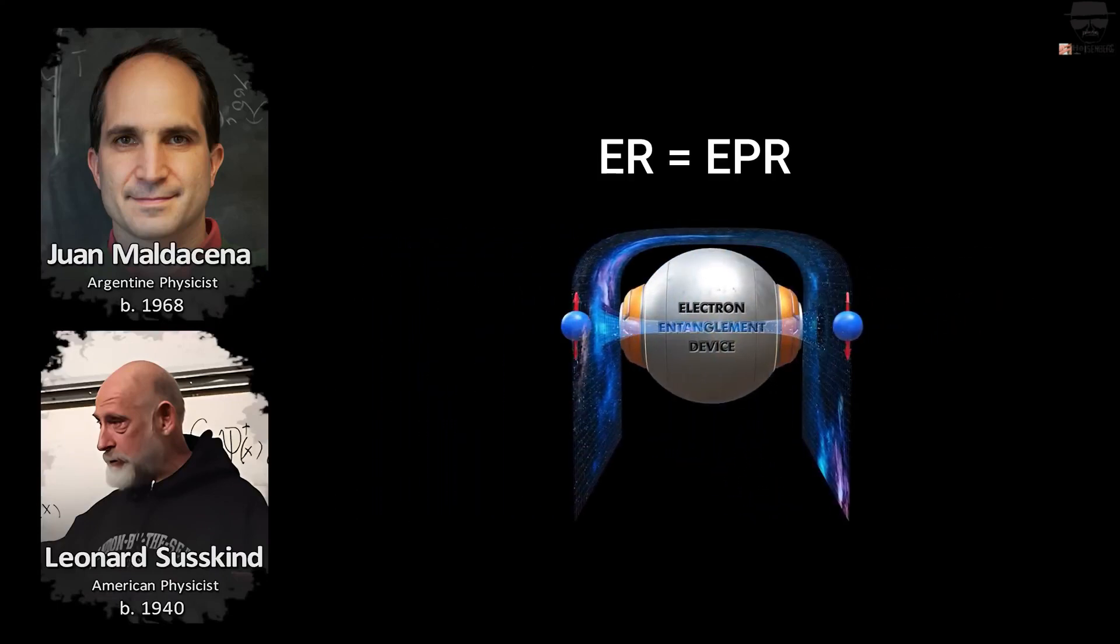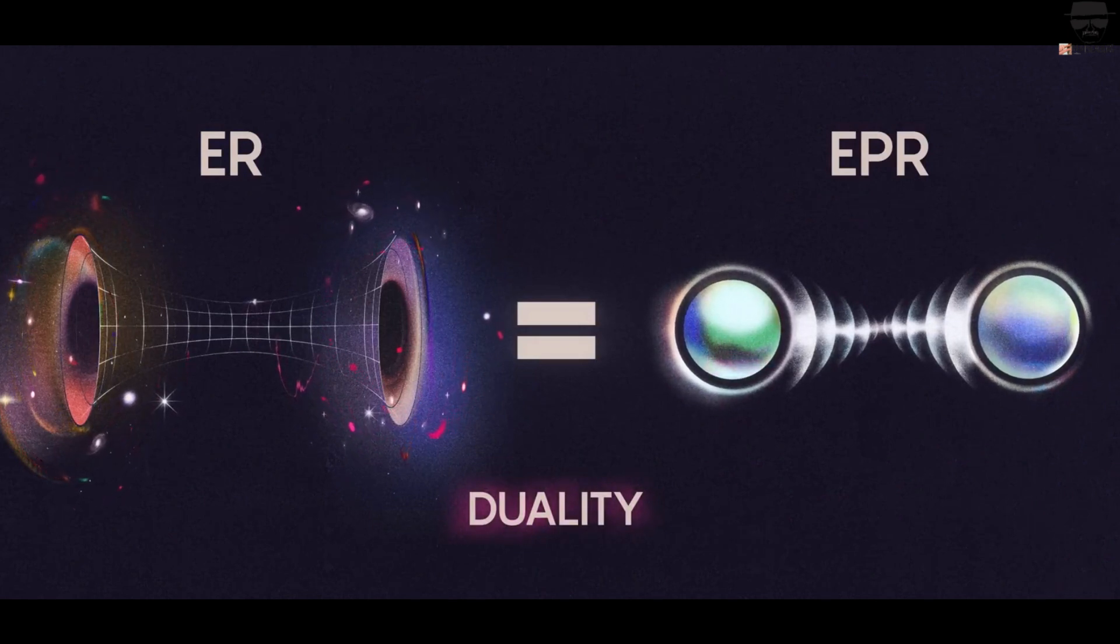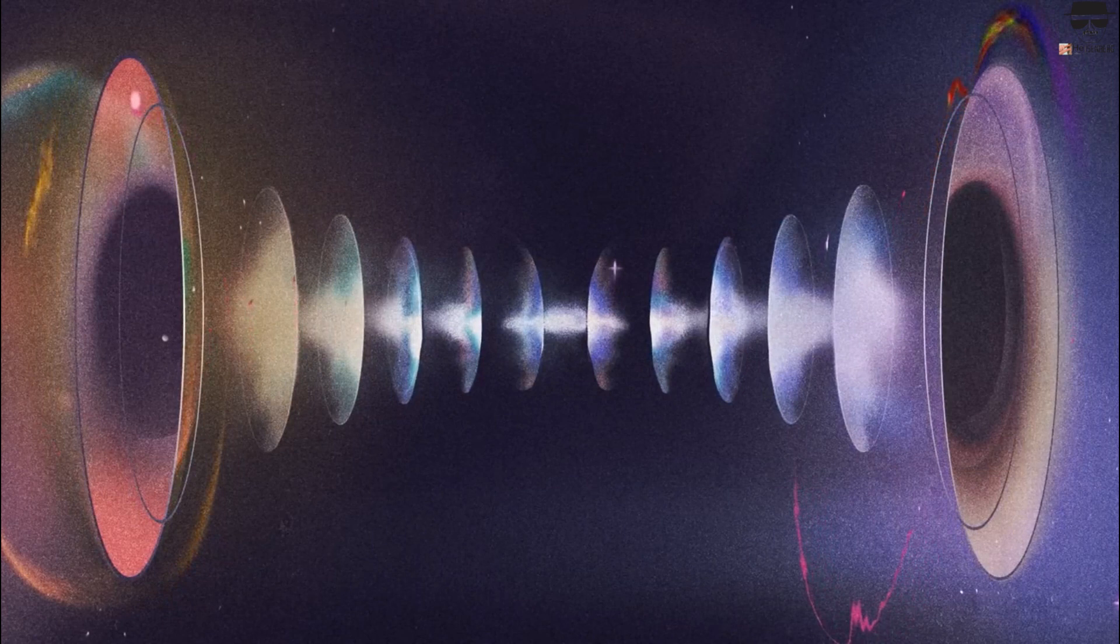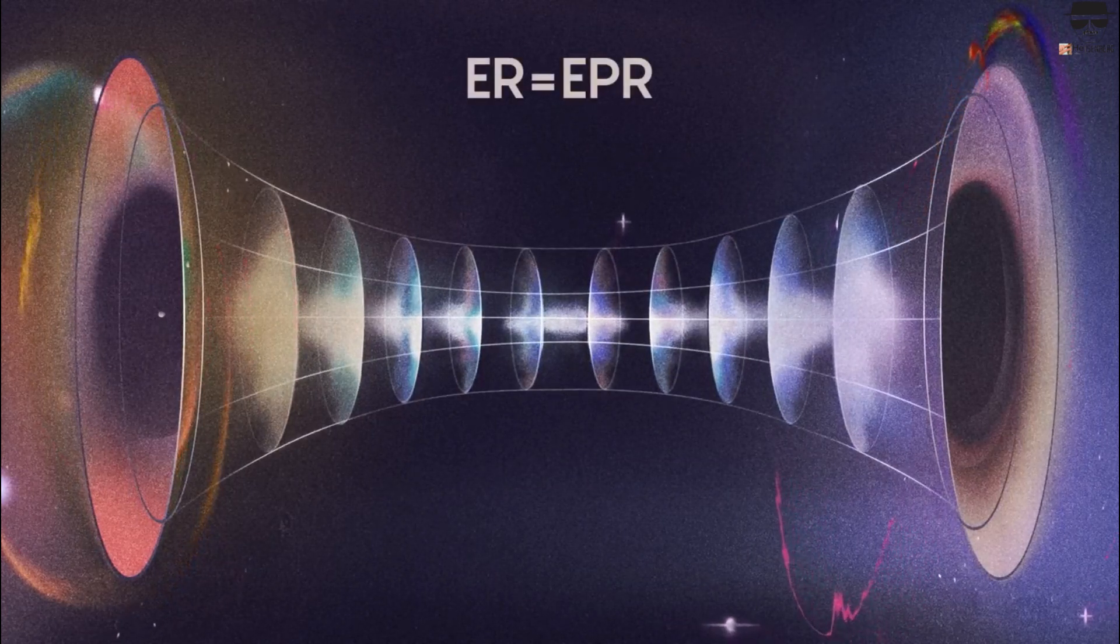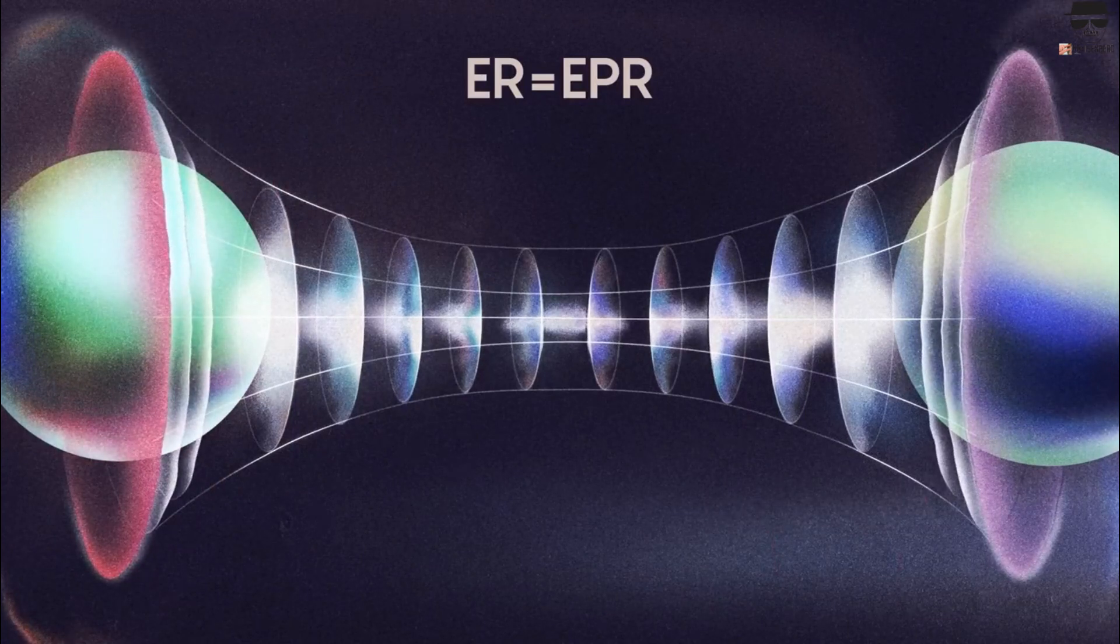ER equals EPR. If it is indeed true that ER equals EPR, then we are in luck, because, while we cannot create and generate wormholes, we certainly can do EPR measurements. We have done measurements like that for decades.